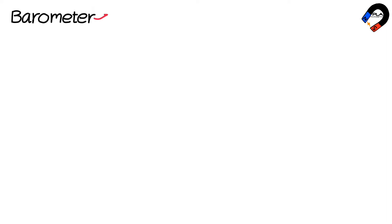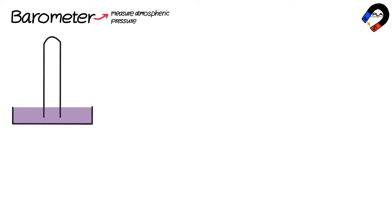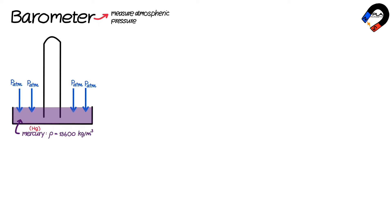A barometer is a device used to measure atmospheric pressure. The simple mercury barometer consists of a column of mercury with a density of 13,600 kilograms per cubic meter. When atmospheric pressure is exerted on the surface of mercury,